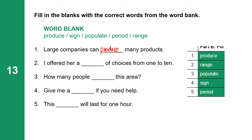Now fill in the blanks with the correct words from the word bank: produce, sign, populate, period, and range. Large companies can produce many products. I offered her a range of choices from one to ten. How many people populate this area? Give me a sign if you need help. This period will last for one hour.